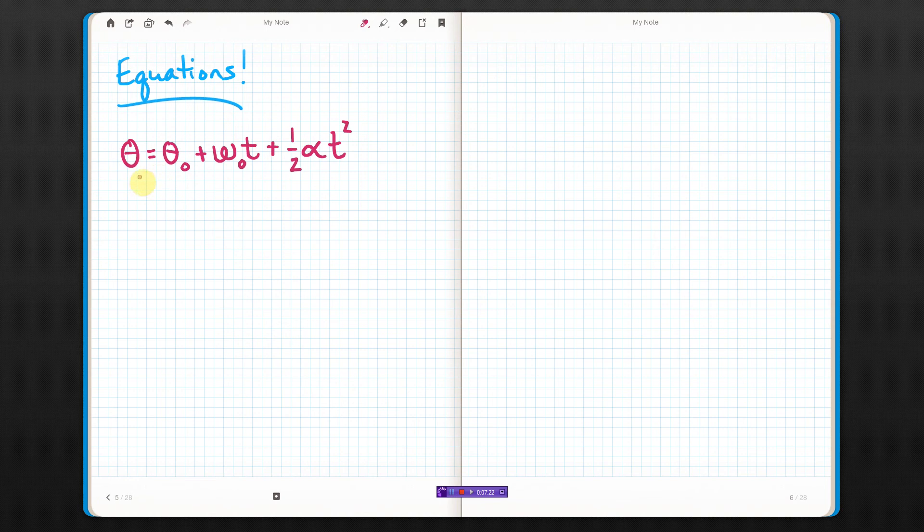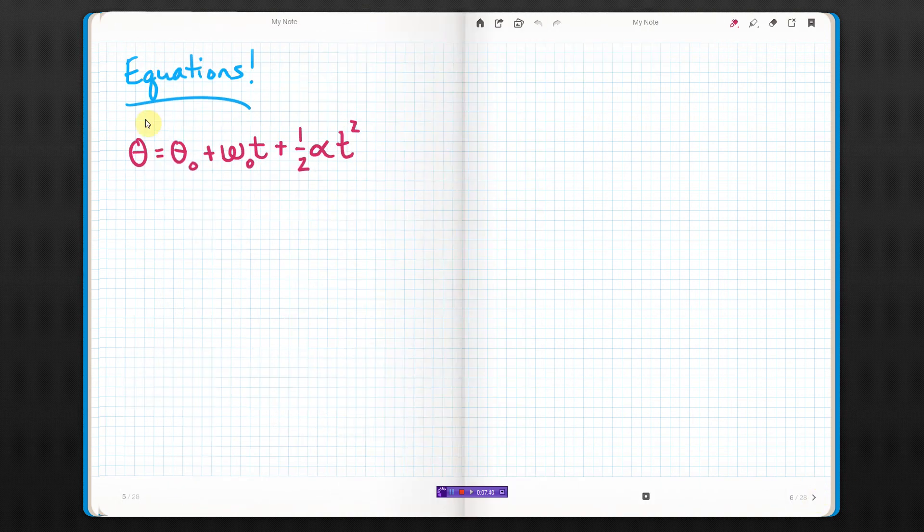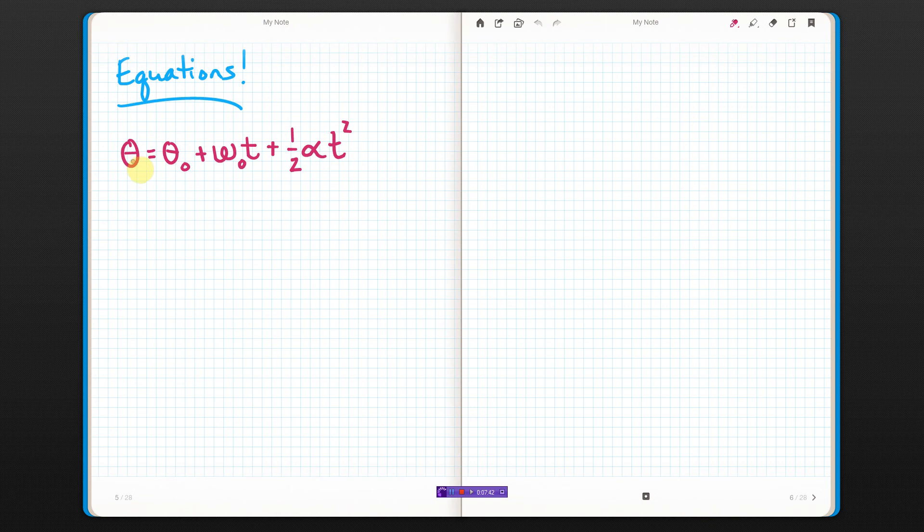This really works if you want to know what angle your, let's say you put a ladybug at the edge of that circle. There's a ladybug sitting right here, and I want to know where it is on the circle after a certain amount of time. This is what I would use. This would be where it is after a certain amount of time, this is what angle it started at, this is the velocity that the thing was spinning when it started, and this is how fast the velocity changes.